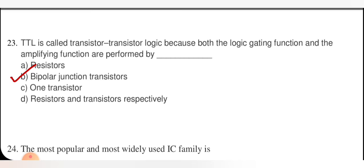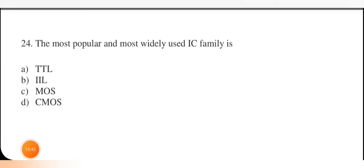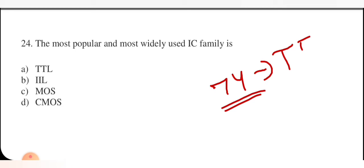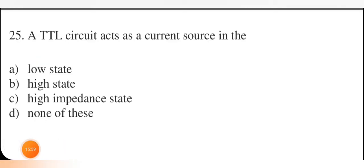The most popular and most widely used IC family is the 74-series — right option is option A. A TTL circuit acts as a current source in the high state and as a current sink in the low state. Please remember: high state — current source; low state — current sink.